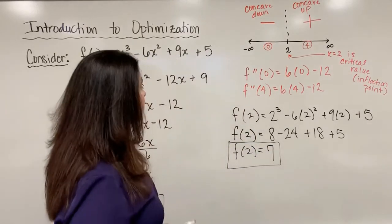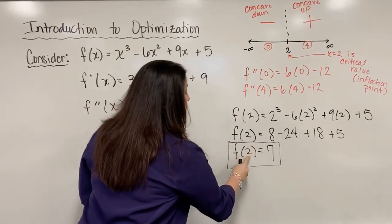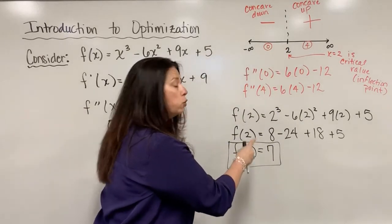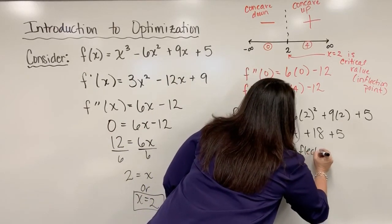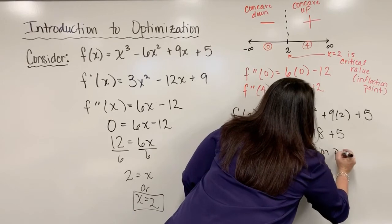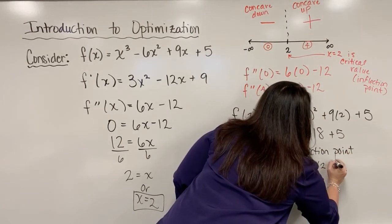In this case we know now that since x equals 2 is an inflection point, the full point happens to be 2 comma 7. So we have an inflection point at (2, 7).